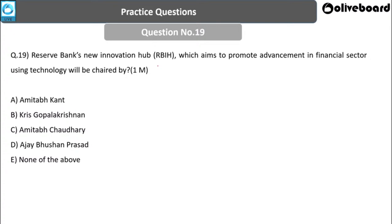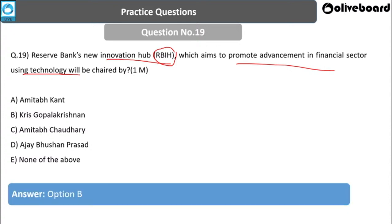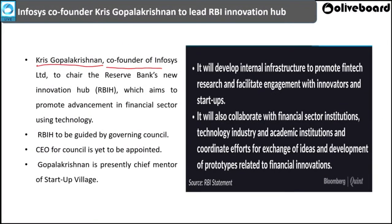Next question: RBI's new innovation hub — RBI HEDGE — aims to promote advancement in the financial sector using technology. Who will chair it? Options: Amitabh Khan, Kris Gopalakrishnan, Amitabh Chaudhary, Ajay Bhushan Prasad, or None of the above. The answer is Kris Gopalakrishnan. Kris Gopalakrishnan, co-founder of Infosys, will chair the RBI Innovation Hub, which aims to promote advancement in the financial sector through technology and support fintech innovation.